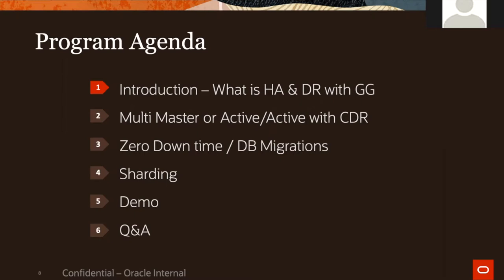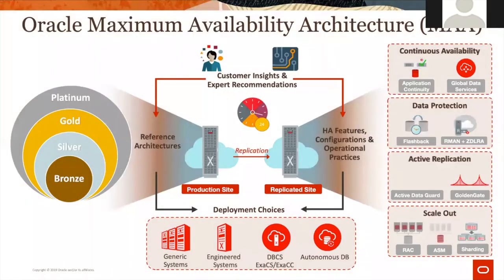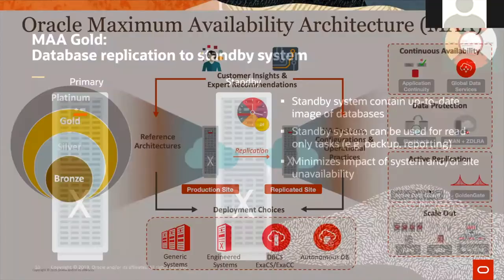Before we dive into how Golden Gate supports high availability, I want to show where Golden Gate fits in the Maximum Availability Architecture. There are different tiers: bronze, silver, gold, and platinum. At the platinum tier, we have active replication — both Active Data Guard and Golden Gate. Golden Gate provides logical active replication from multiple sources to multiple targets, and it's active-active on both sides. That's where Golden Gate falls in the MAA.